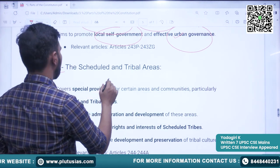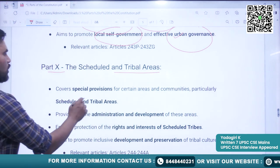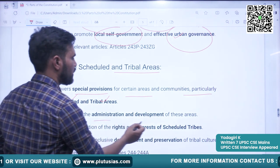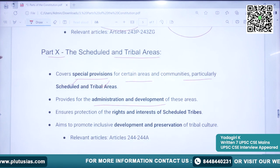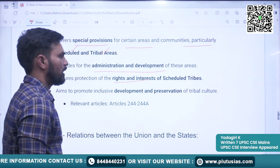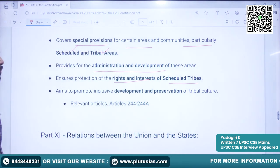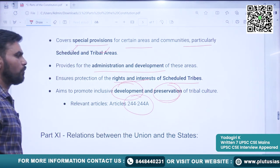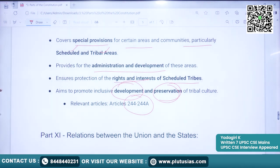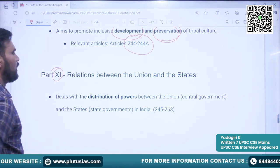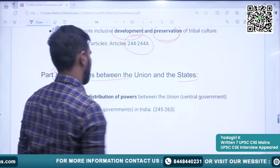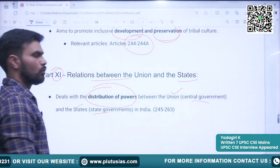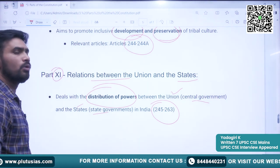Part 10 covers Scheduled and Tribal Areas. It covers special provisions for certain areas and communities, particularly scheduled and tribal areas. It provides for administration and development of these areas, ensures protection of rights and interests of scheduled tribes, and aims to provide inclusive development and preservation of tribal culture. The relevant articles are Article 244 to 244A. Part 11 is about Relations between the Union and the States — it defines the distribution of powers between the Union (Central Government) and the States (State Government). Articles covered are 245 to 263.